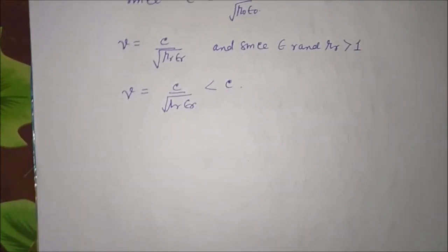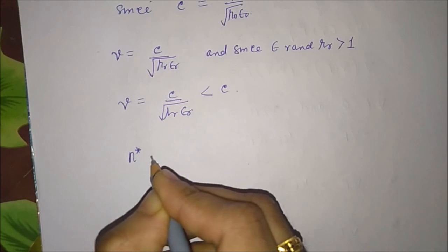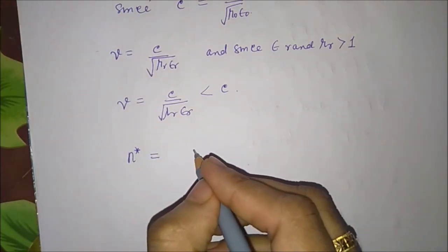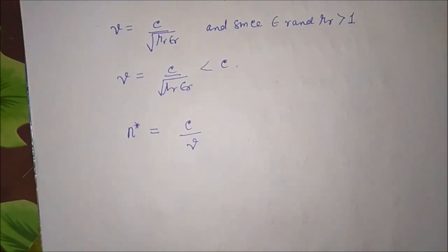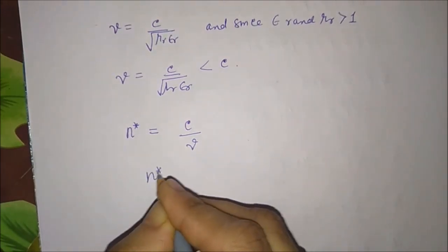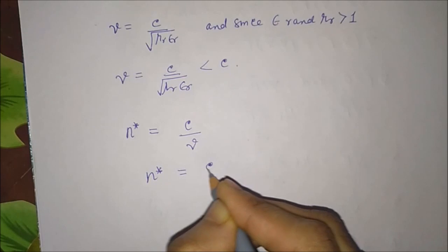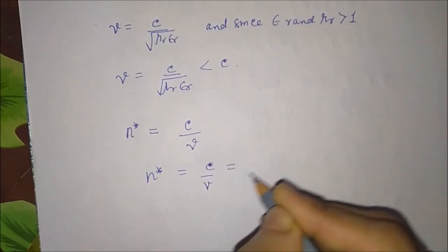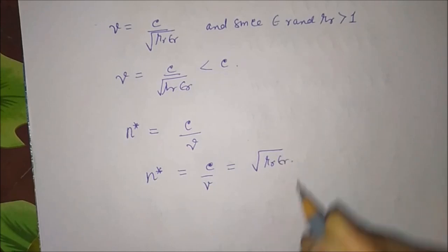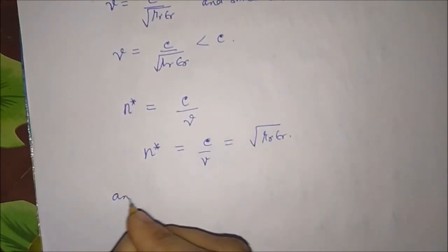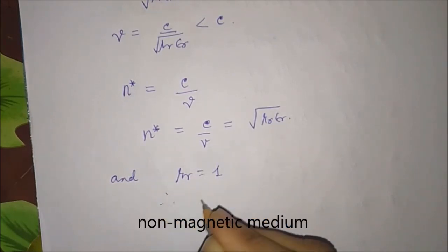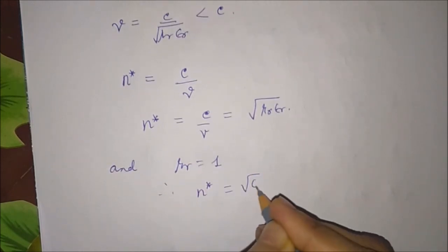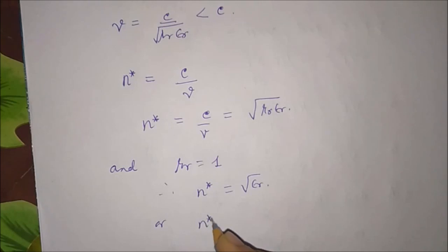The refractive index n* is given by the speed of light in vacuum divided by the speed of light in the medium. So n* equals c/v equals sqrt(mu_r epsilon_r). For a non-magnetic material where mu_r equals 1, n* equals sqrt(epsilon_r), or n*² equals epsilon_r.